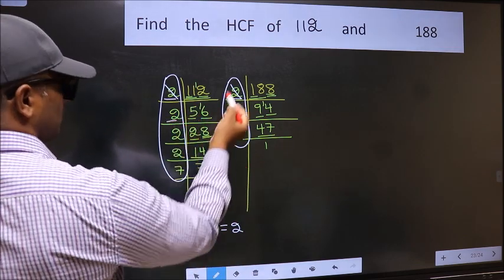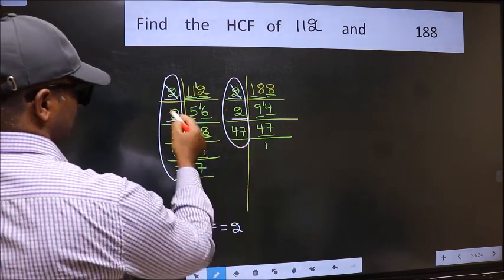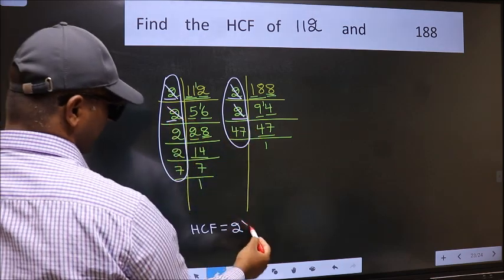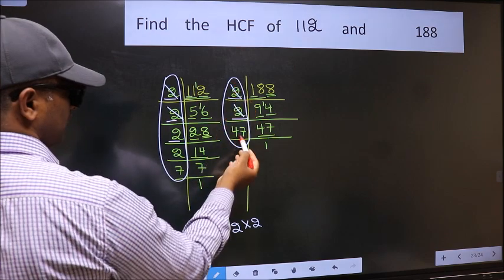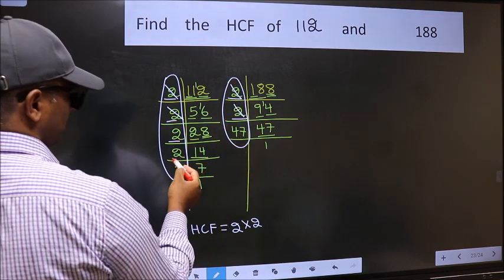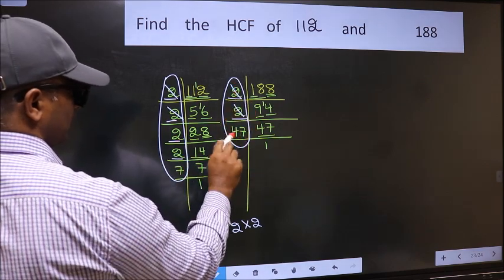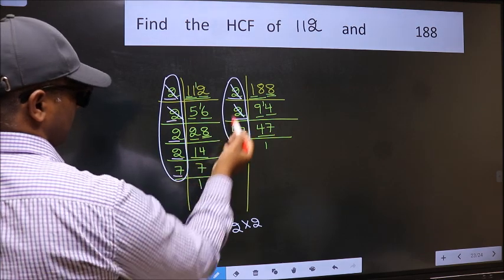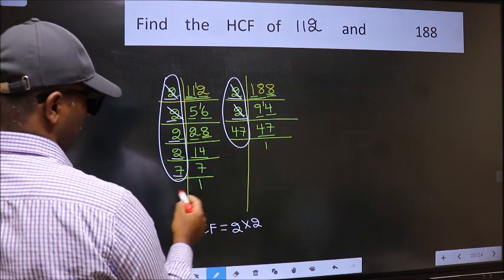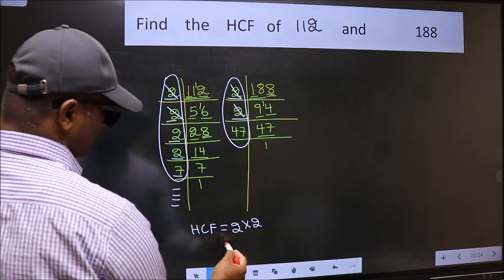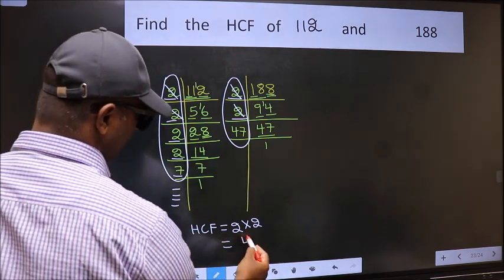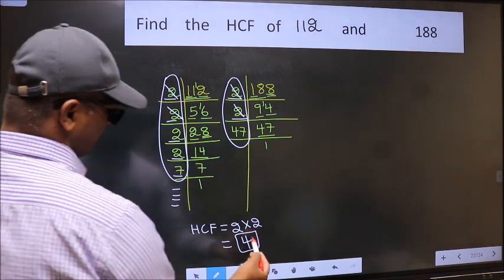Next number 2, do we have 2 here? No. Next number 7, do we have 7 here? No. No more numbers have been left out. So our HCF is 2 into 2, 4 is our HCF.